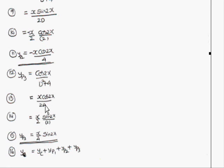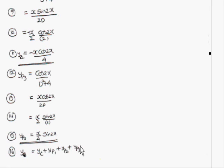So yp3 = (x/2)·(1/D)·cos2x = (x/2)·∫cos2x dx = (x/2)·(sin2x/2) = x·sin2x/4. Therefore, the general solution is y = complementary function + yp1 + yp2 + yp3, giving y = C₁cos2x + C₂sin2x + eˣ/5 - x·cos2x/4 + x·sin2x/4. Thank you.